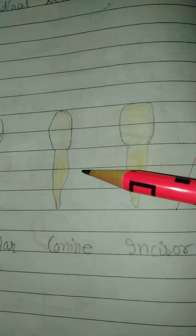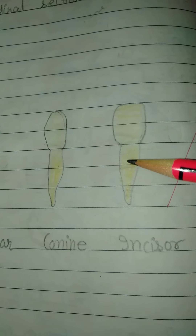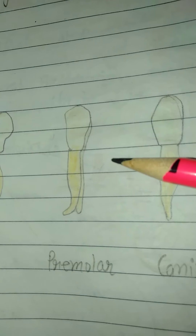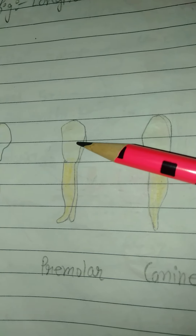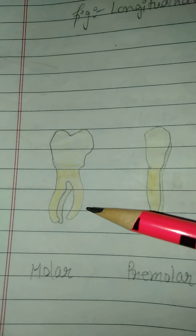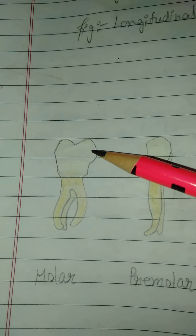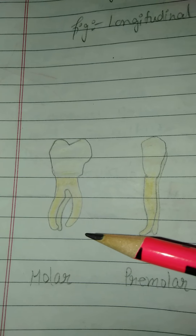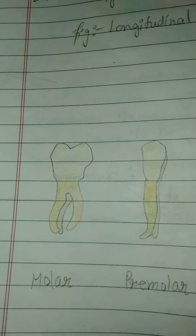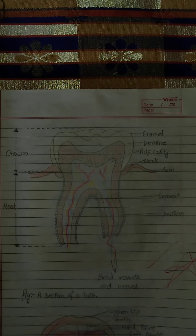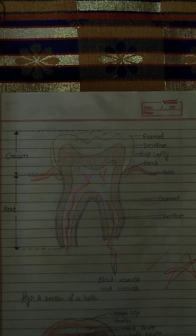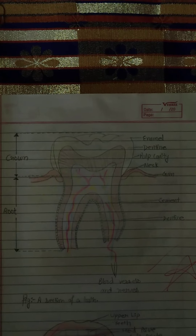This is premolar, which is used for crushing the food materials. And this is molar, with a broad structure, and it is used for crushing the food material. This is the strong crushing teeth. And this is the structure of teeth.